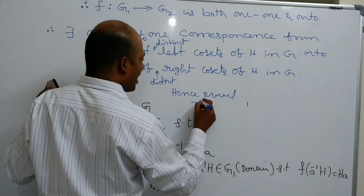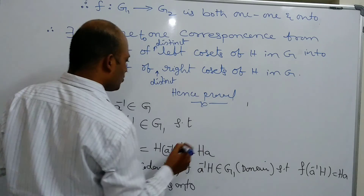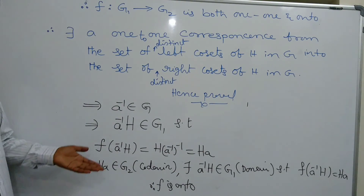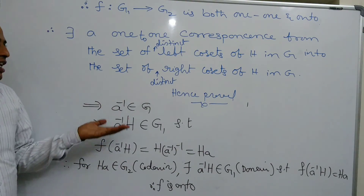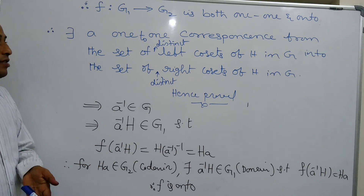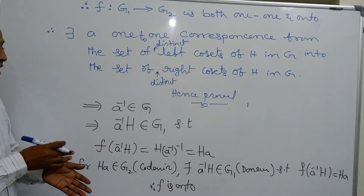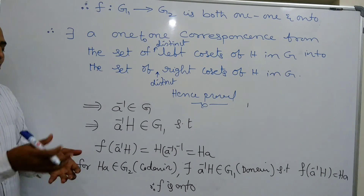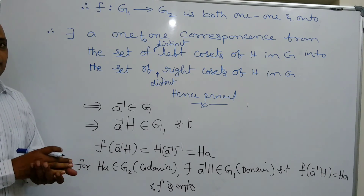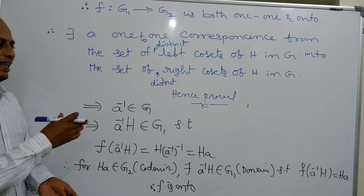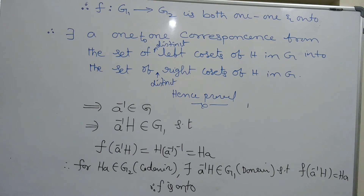Therefore we conclude that F maps G1 to G2 and is both one-to-one and onto, establishing a one-to-one correspondence from the set of all distinct left cosets of H in G to the set of all distinct right cosets of H in G. This completes the proof. Practice these two theorems — they are very important because they play a vital role while learning the partitions of a group in higher classes. Keep learning. Thank you.